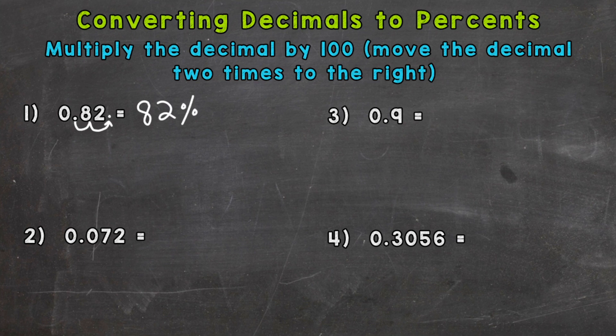Number two — again, multiply by 100 by moving the decimal twice to the right. One, two. And the decimal is now between the seven and two. Put our percent symbol — seven and two-tenths percent.